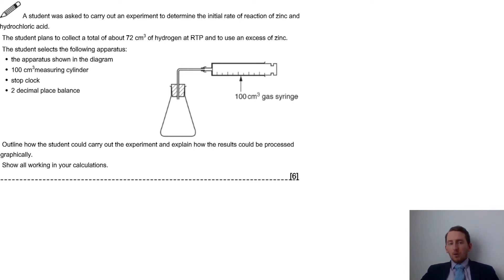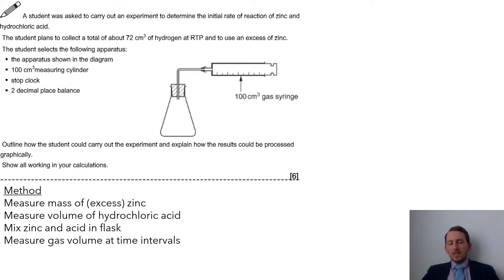It starts off relatively straightforward with just a very simple method. We measure how much zinc we need, measure the volume of acid, mix them together, and then we're going to measure the gas at set intervals. So that's very simple, very straightforward.